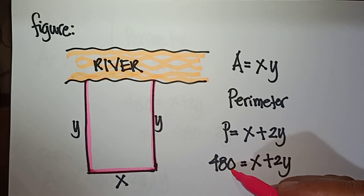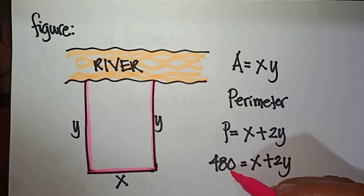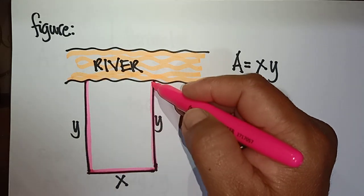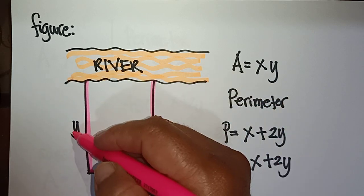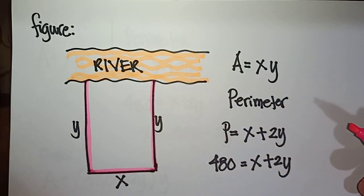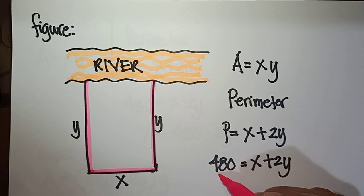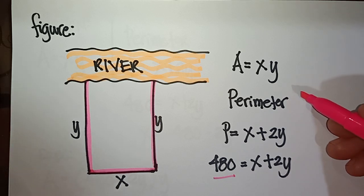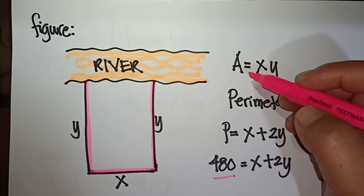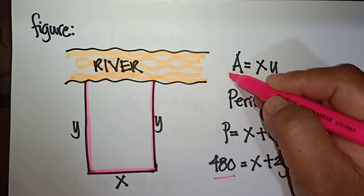The amount of fencing material available is 480 meters, which is used for the two y sides and one x side. Therefore, 480 = x + 2y. From here, we are going to find the derivative of the area.